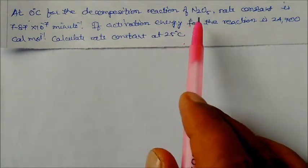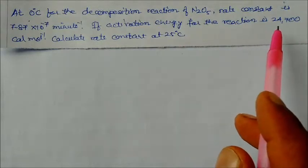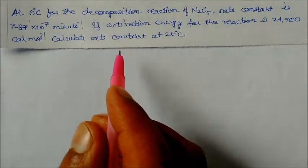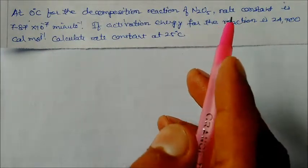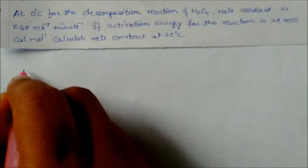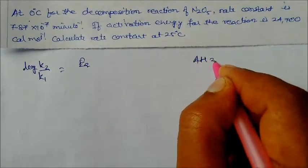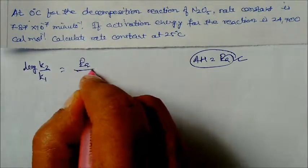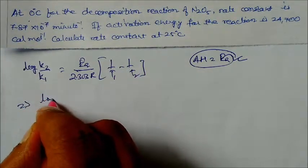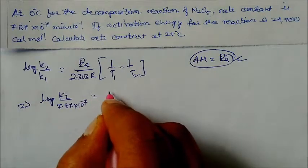Next question: at 0°C, for the decomposition reaction of N₂O, the rate constant is 7.87×10⁻⁷ per minute. If the activation energy is 24700 cal/mol, what is the rate constant at 25°C? This uses the Arrhenius equation in modified Clausius-Clapeyron form: log(k2/k1) = (Ea / 2.303R) × (1/T1 − 1/T2).